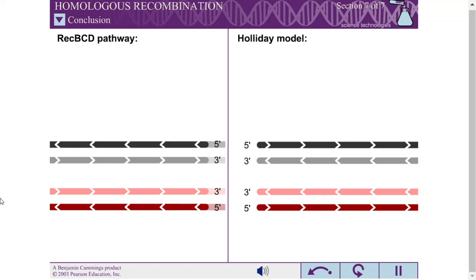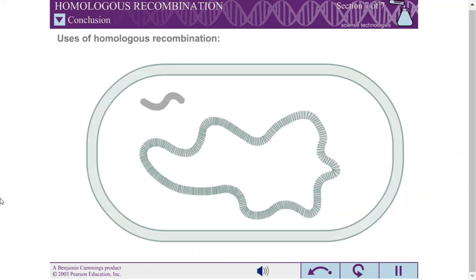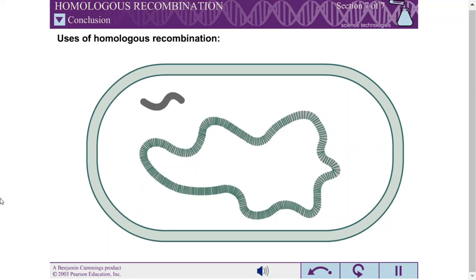First, the double-strand break-repair model involves a double-stranded break in one DNA molecule rather than single-stranded NICs in both DNA molecules. The double-strand break-repair model is used by both prokaryotes and eukaryotes to exchange genetic information. This pathway can be used in several different cellular processes.